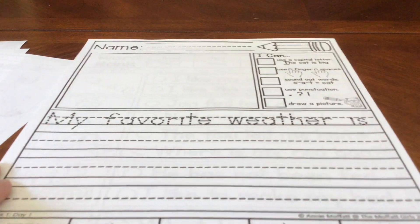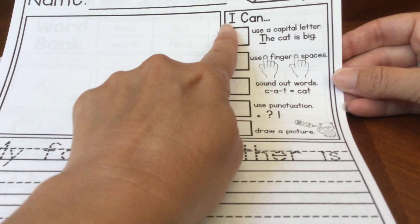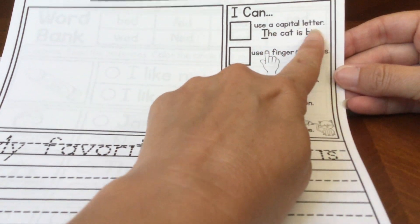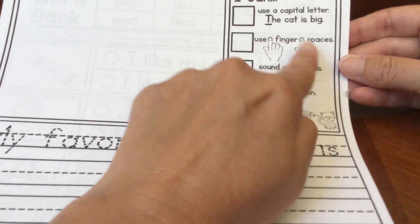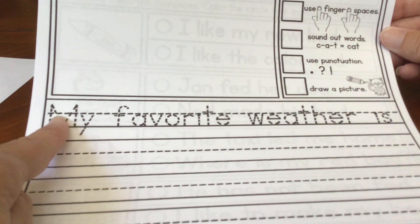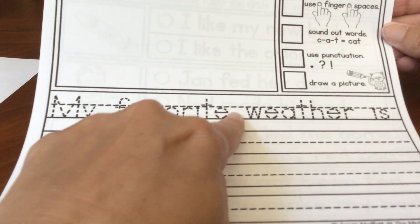Then we're going to do some writing. Before we start writing, look at your rules for good writing. I can use a capital letter. Start your sentence with a capital letter. I can use finger spaces, the spaces between your words. It says my, space, favorite, space, weather, space, is.